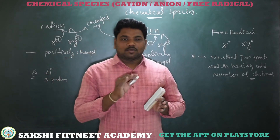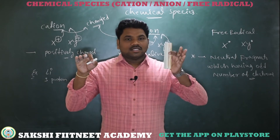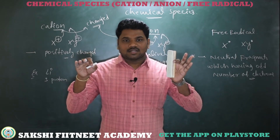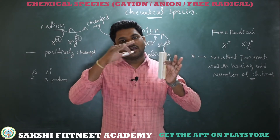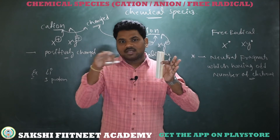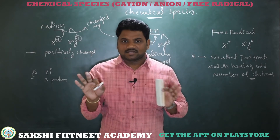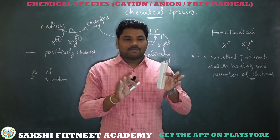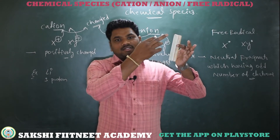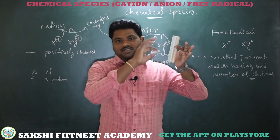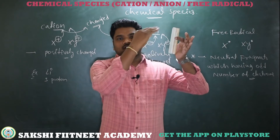Protons are positively charged and electrons are negatively charged. When an element has the same number of protons and electrons — for example, ten protons and ten electrons — the charge becomes neutral. If the proton number is in excess, then the positive charge equals the number of excess protons. That means the oxidation state — the positive charge — equals the number of excess protons.